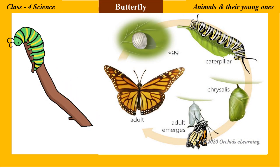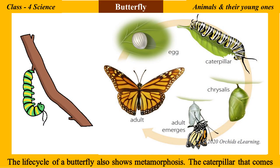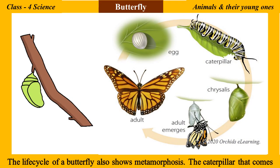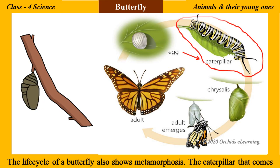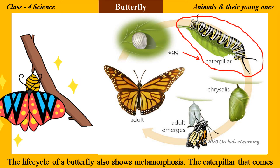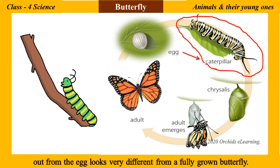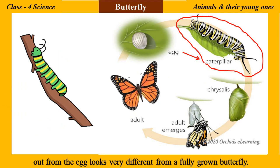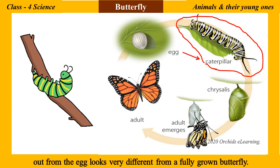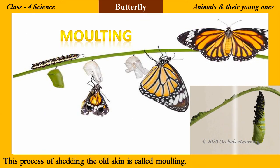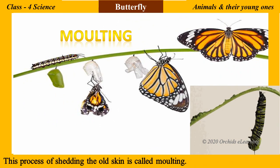The life cycle of a butterfly also shows metamorphosis. The caterpillar that comes out from the egg looks very different from a fully grown butterfly. This process of shedding the old skin is called molting.